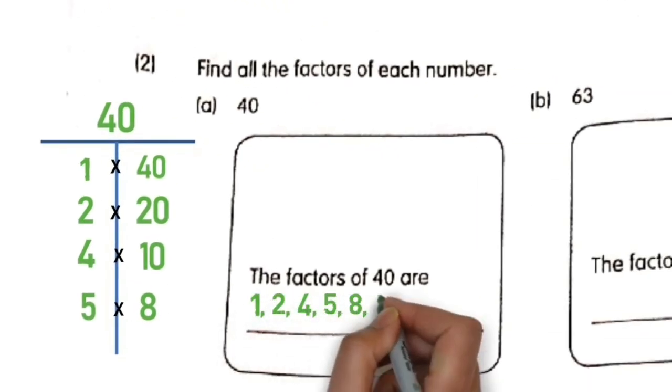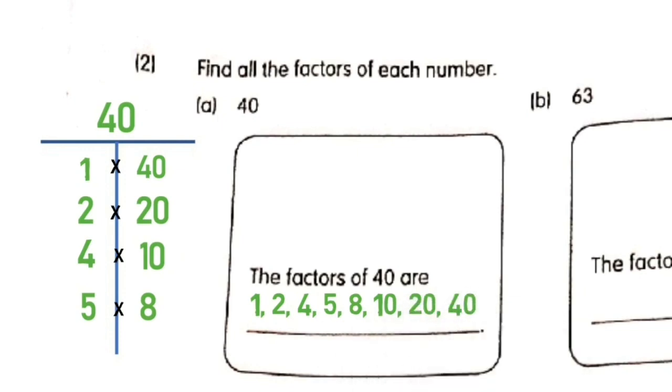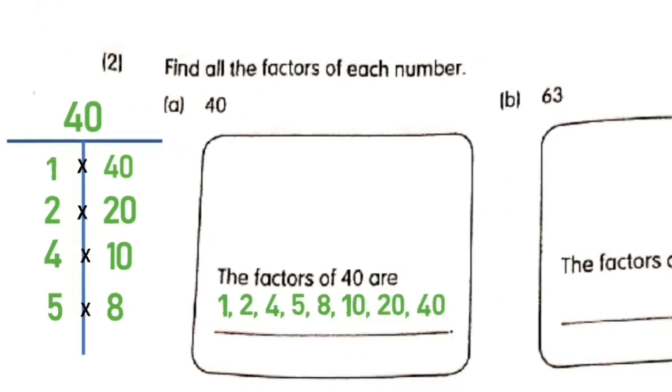What else? 4. Obviously, 4 times 10. That's correct. What else? 5. Yes, 5 times how many? 8. Yes, it is 8. Is there anything else? No. So we write the factors: 1, 2, 4, 5, 8, 10, 20, and 40.